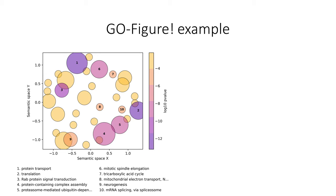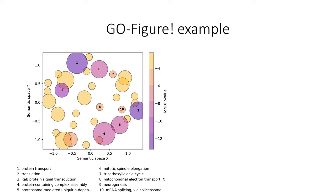After all this, GoFigure produces a scatterplot. This example is based on the default settings — each group is colored based on the p-value of the representative term, and the size indicates how many GO terms are part of each group. Looking at group six, for example, it is represented by the term 'mitotic spindle elongation.' The other terms in the group are 'mitotic spindle organization' and 'mitotic G2 DNA damage checkpoint,' which are relatively close to each other on the GO DAG. GoFigure chose 'mitotic spindle elongation' because its p-value is three times lower than the others.